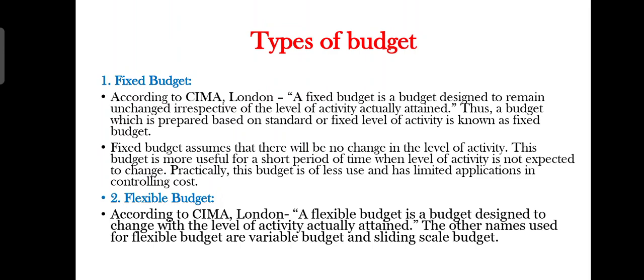Fixed budget assumes there is no change in the level of activity. This budget is useful for a short period of time when activity is not expected to change. For the long term it is not efficient because we cannot predict exactly that only this amount will come — there must be some variation. Business conditions can arise that require us to increase or decrease the level of activity. A best example is COVID: before the pandemic, mask production was very limited, but post-pandemic it suddenly increased, and a fixed budget cannot accommodate such changes.